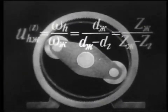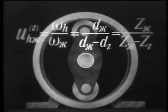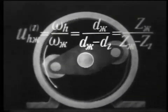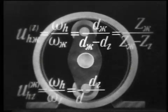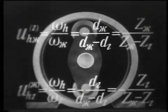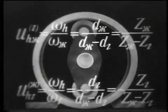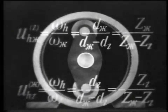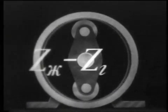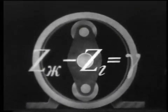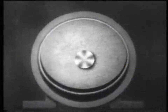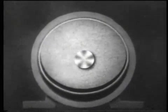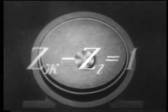When the rigid wheel is stationary, the direction of rotation of the driven link changes. In wave transmissions, from assembly conditions, the difference in the number of teeth of rigid and flexible wheels is assumed to be equal to, or a multiple of, the number of generator waves. Transmissions can be single-wave, two-wave, and multi-wave.